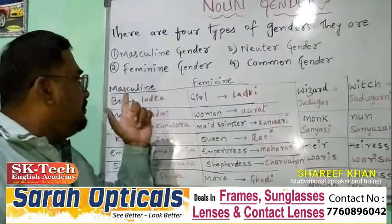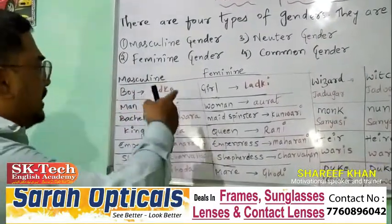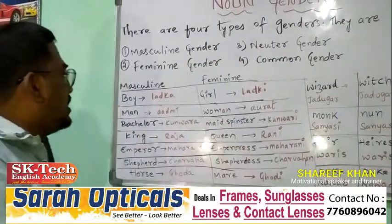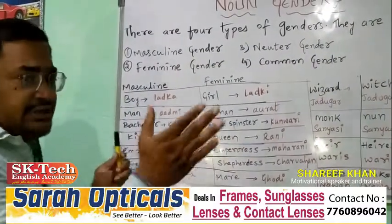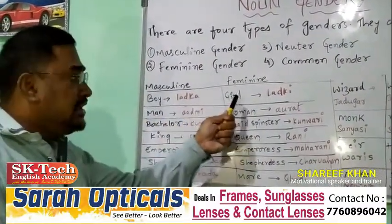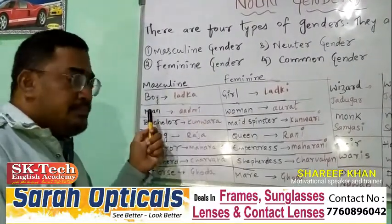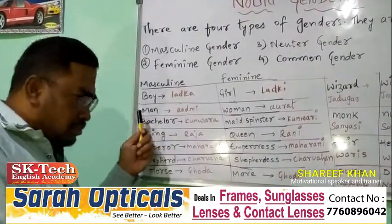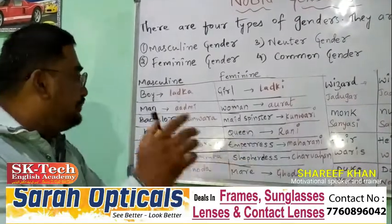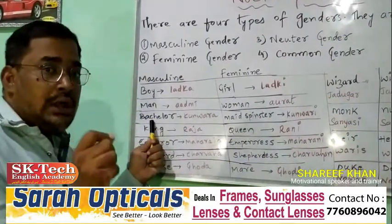Let us start. Masculine is male, feminine is female. Here I am giving examples: Boy — larka, Girl — larki. Man — admi, Woman — aurat. Bachelor — larka.